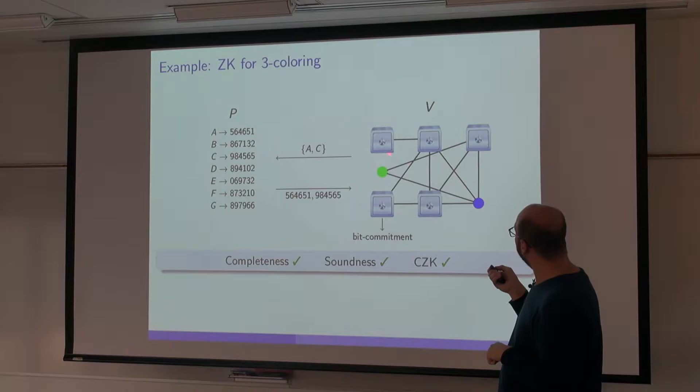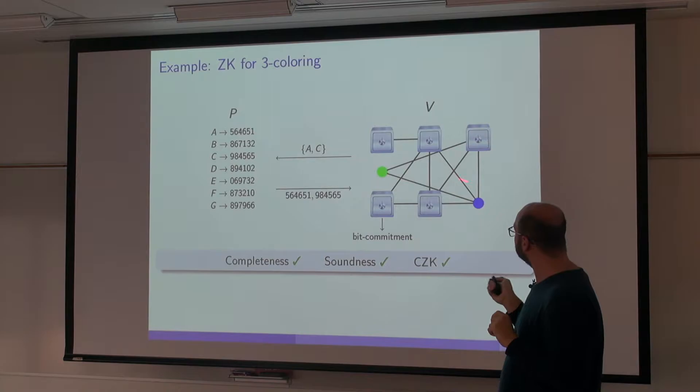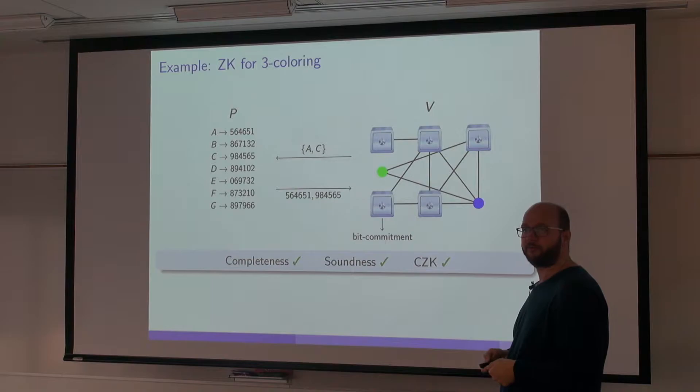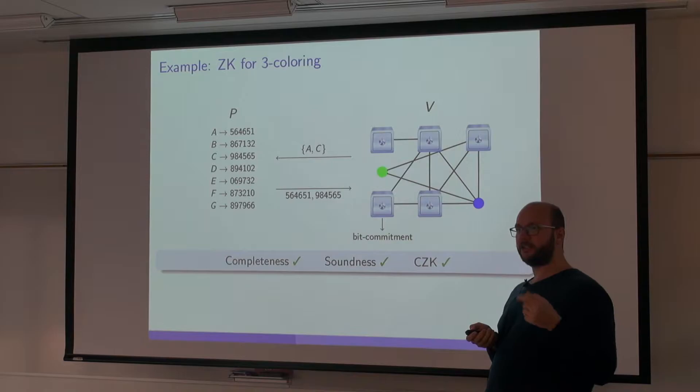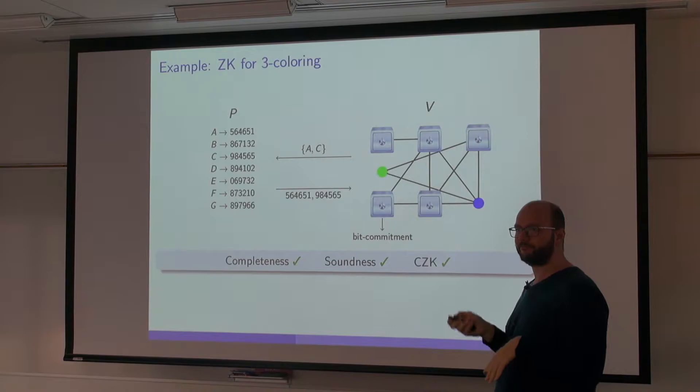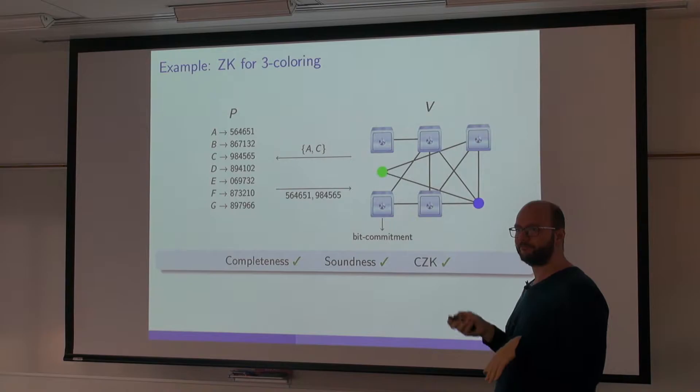To summarize: at the end of the protocol, the only information the verifier has is that she opened two safes with two different colors — and this could be computed by herself. Regarding bit commitments: you can assume they restrict what can be put in the safe, and with commitment schemes you can have this type of restriction, unlike physical safes.